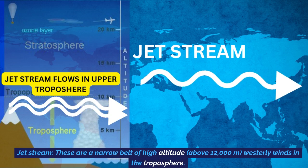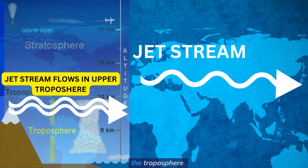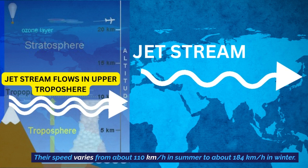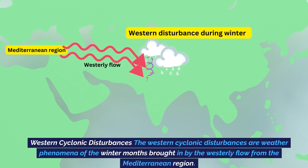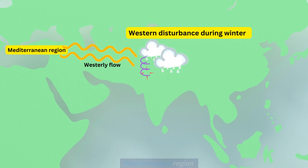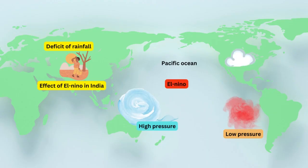Next is the jet stream — a narrow belt of high altitude, above 12,000 meters, westerly winds in the troposphere. Their speed varies from about 110 km per hour in summer to about 184 km per hour in winter. The jet stream flows in the upper troposphere. Next are western cyclonic disturbances, which are weather phenomena of the winter months brought in by the westerly flow from the Mediterranean region. They usually influence the weather of the north and northwestern regions of India.